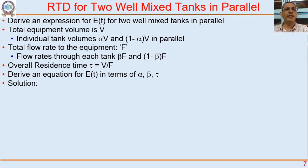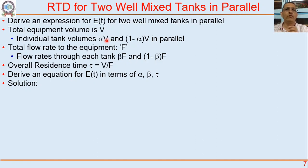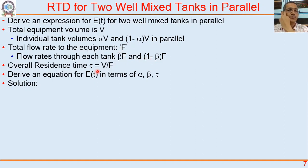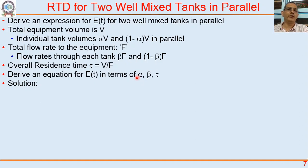Here is the next problem: derive an expression for E(t) for two well-mixed tanks in parallel. Total equipment volume is V. This equipment behaves as two well-mixed tanks in parallel — one of volume αV with flow rate βF, and another of volume (1−α)V with flow rate (1−β)F. The overall residence time is τ = V/F. Derive E(t) in terms of α, β, and τ. You can use either a step change or a pulse change. Pause the video, do it for yourself, and only then go forward to check your answer.